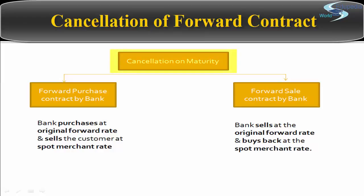To safeguard itself against the loss from cancellation, the bank recovers that loss from the customer. First scenario: cancellation at maturity date. Two types of agreement — one is a forward purchase agreement by the bank, the other is a forward sale contract by the bank. If there is a forward purchase contract by the bank with a two-month contract period, there is also a selling agreement by the bank in which the bank earns a certain margin. But after two months, the customer cancels the forward contract while the bank still has to meet its forward sale agreement.